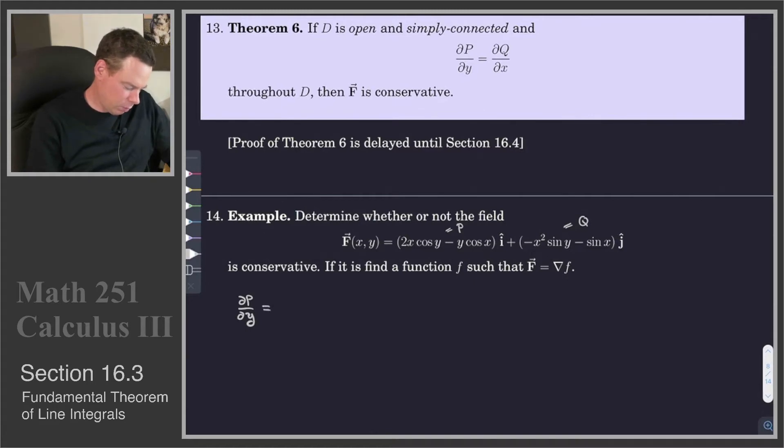And when I take the derivative with respect to y, I get 2x and derivative of cos y is negative sine y minus cos x. I also need to compute the derivative of Q with respect to x. That is negative 2x sine y minus cos x. Those two are equal to each other. So these are equal. So that's a good start.